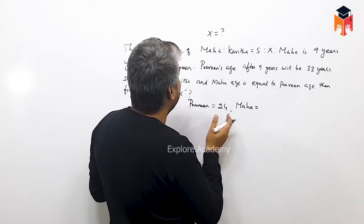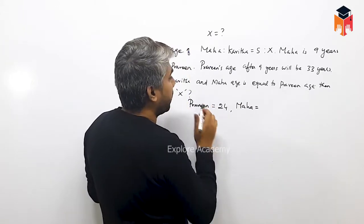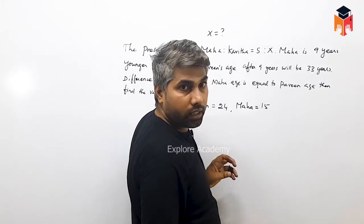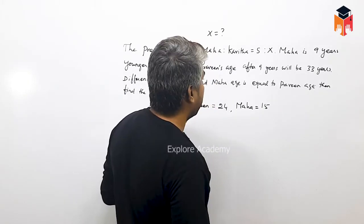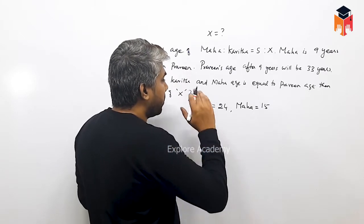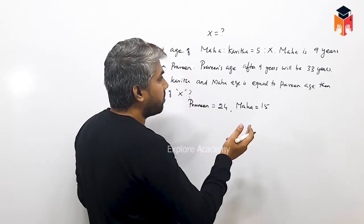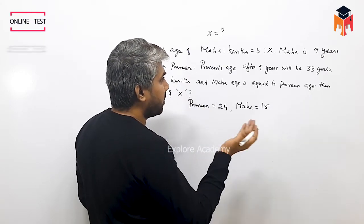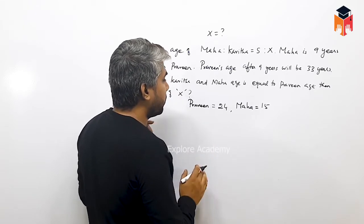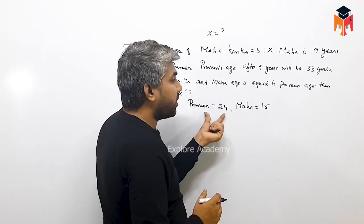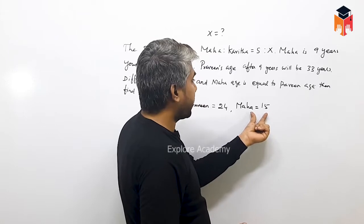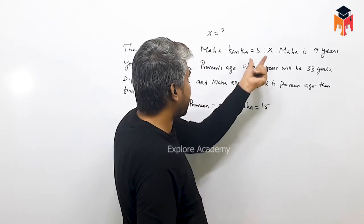Praveen's age after 9 years is 33, so at present: 33 minus 9 is 24. Maga's age is 9 years younger, so Maga's present age is 15. Now link the ratio.